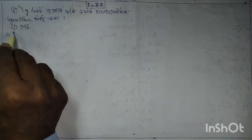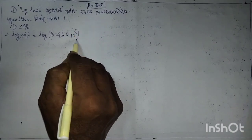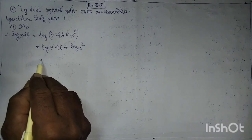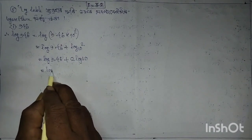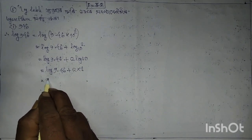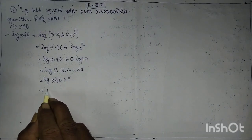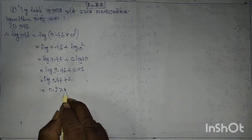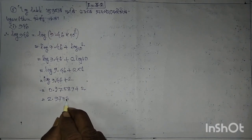Log 9.46 to 10 squared. Log 9.46 plus log 10 squared equals log 9.46 plus log 10, equal to log 9.46 plus 1, equal to log 9.46 plus 2, equal to log 9.46 plus 2. Log 9.46 plus 0.97589 plus 2 equals 2.97589.